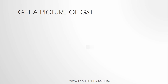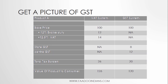To understand GST clearly, let's assume a base price of 100 rupees for a product. In the old VAT system, 12 percent excise duty and 12.5 percent VAT were levied, with no state GST credit available. The total tax burden came to 26 percent, making the consumer price 126 rupees for a product that originally cost 100 rupees.